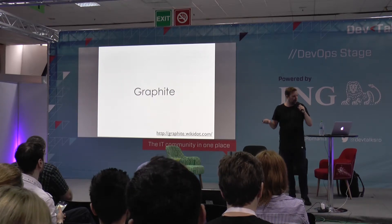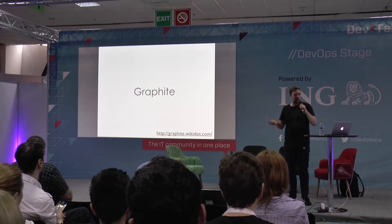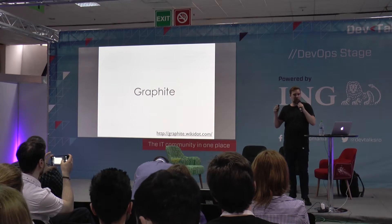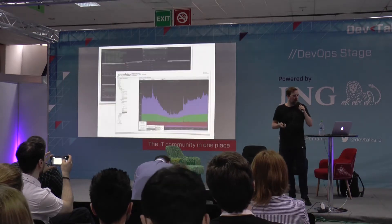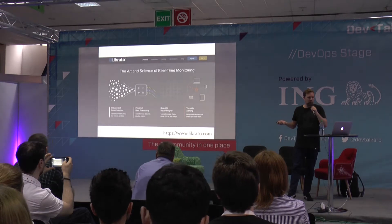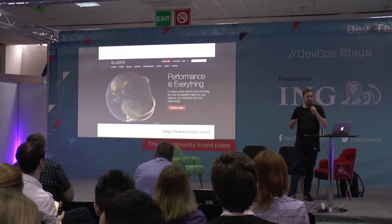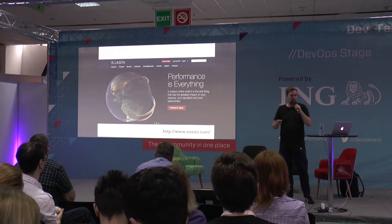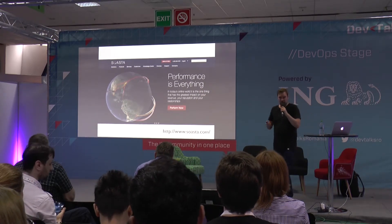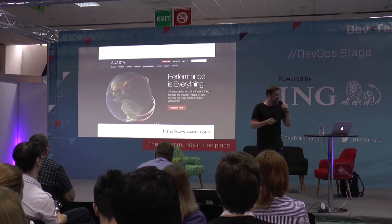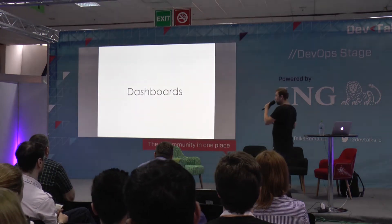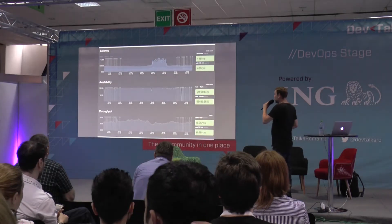What we are using is a graph database called Graphite where you can put all these numbers and it's very well equipped to store them efficiently with nice graphs. There are also tools like Rebrato or Swasta that help you with monitoring performance and availability. Usually these also come with nice dashboards.